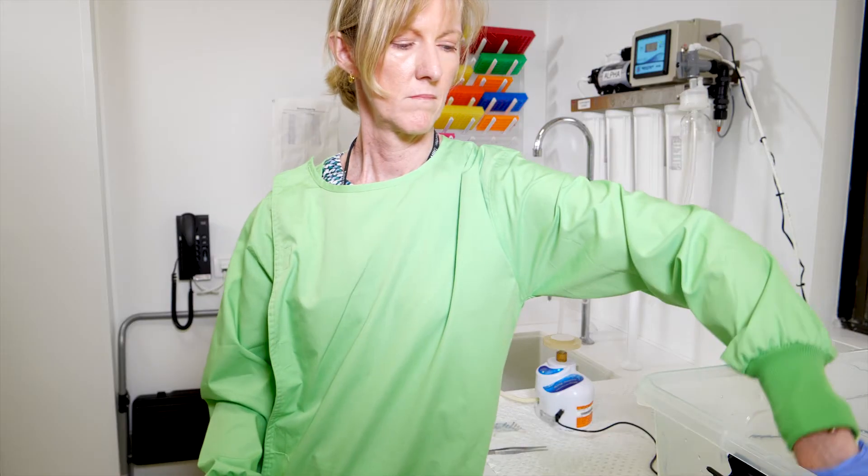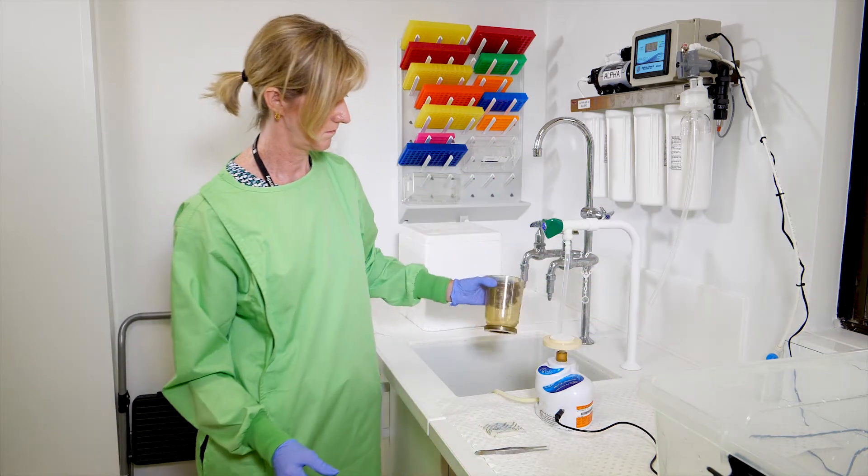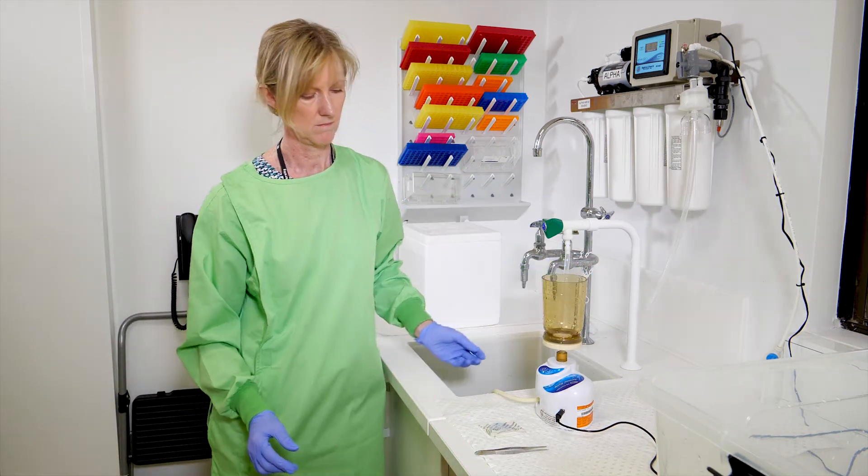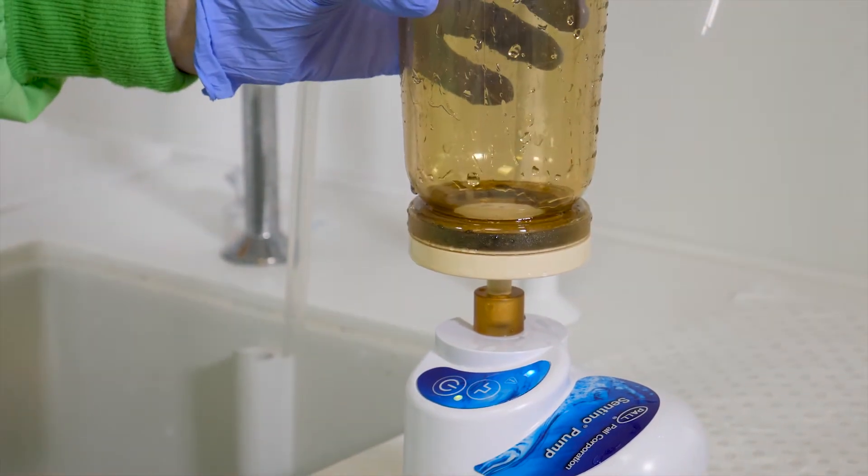Take the funnel out of the rinse water tub and place this onto the filter base. The filter base and funnel are magnetic, so you should feel a secure connection placement.